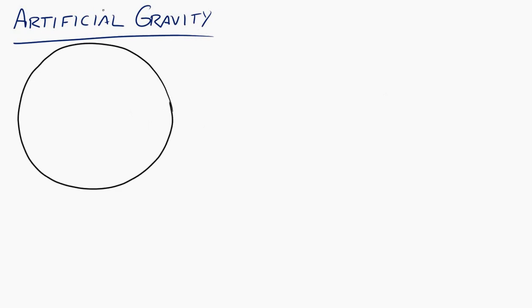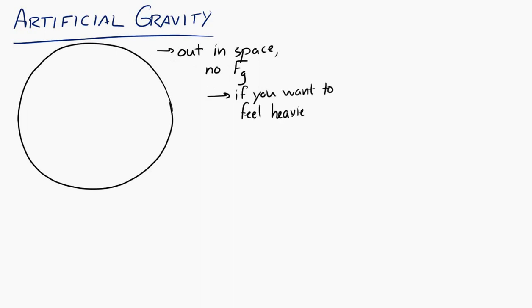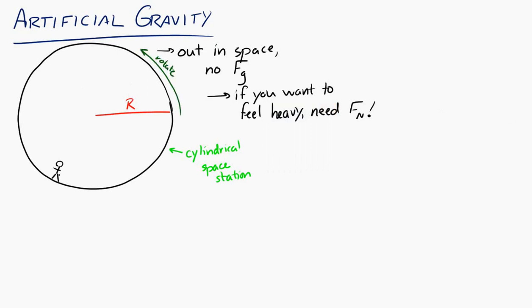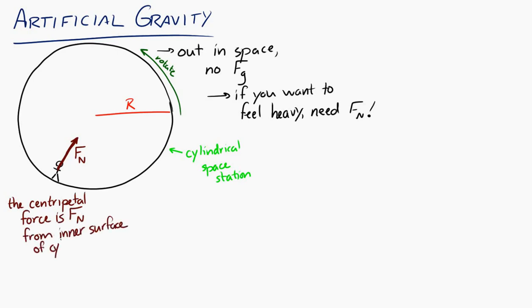Building on that idea, let's look at artificial gravity. Imagine you're out in space with no gravitational force but you want to feel heavy. One way to do this is to build a large cylindrical space station and make it rotate. A person standing on the inside experiences a centripetal force — which is the normal force from the inner edge of the cylinder — making them feel as if they have weight.